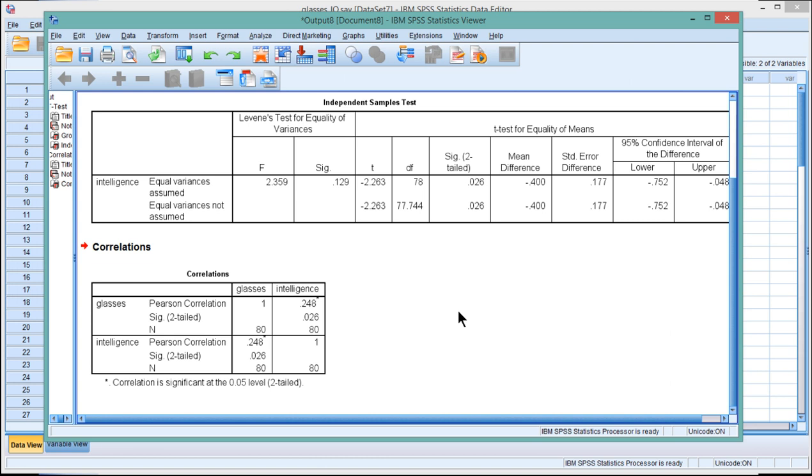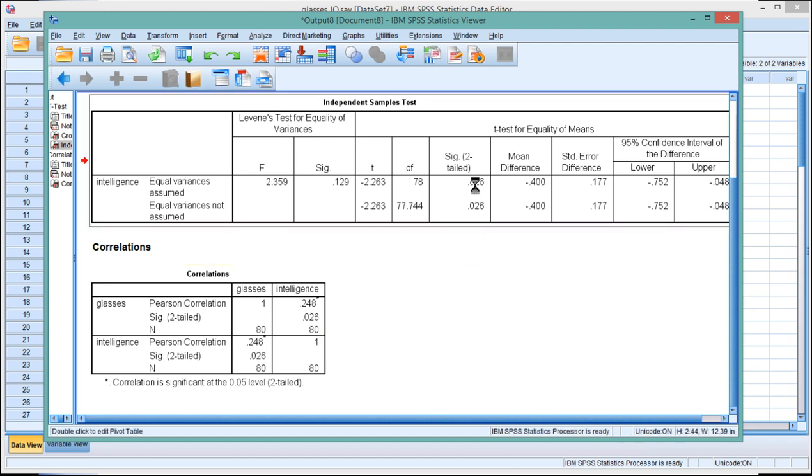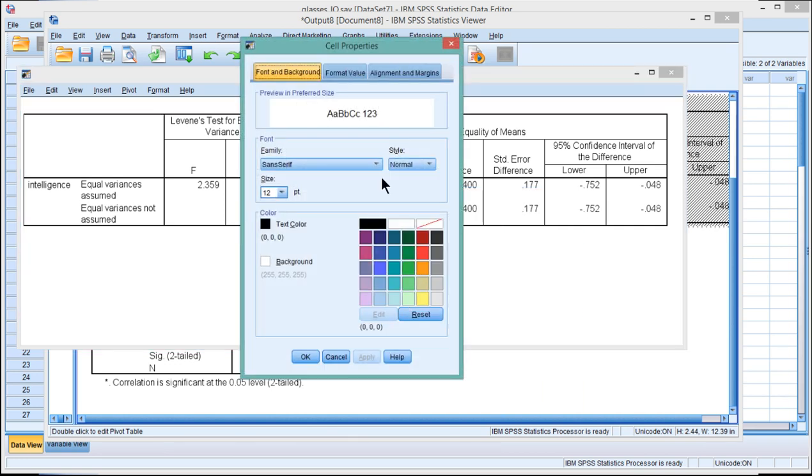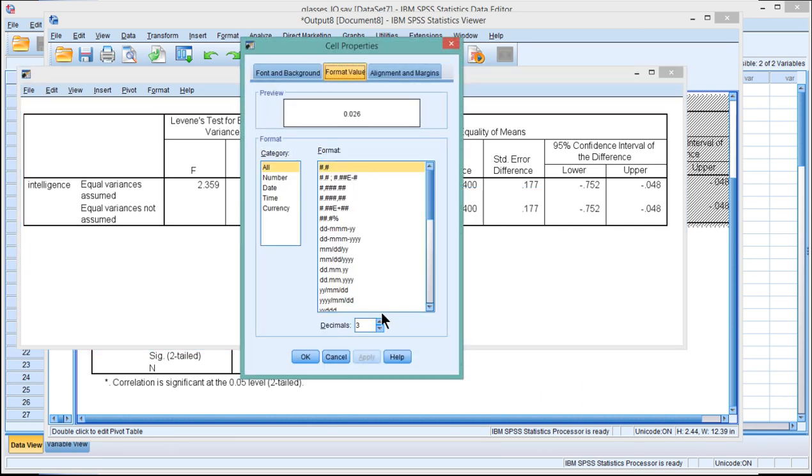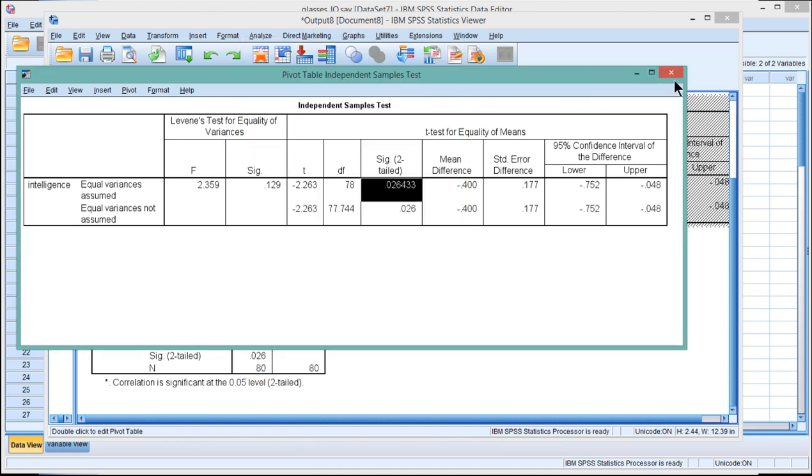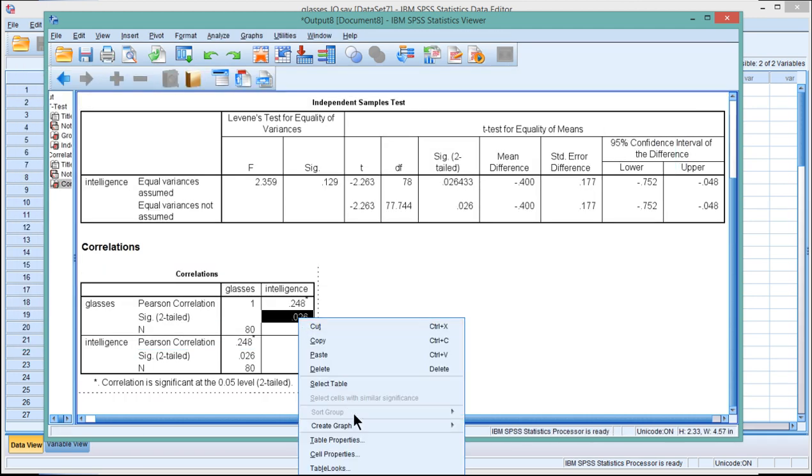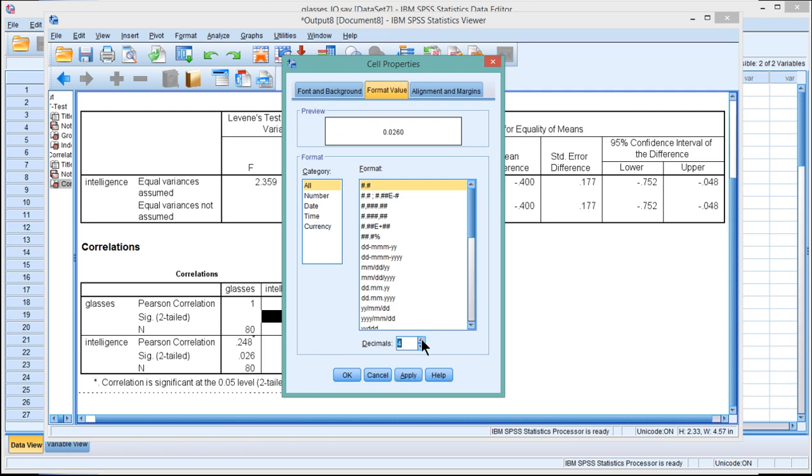It's known as a point-biserial correlation, even though I'm really just going to be doing a Pearson correlation on these data. We just happen to call it a point-biserial correlation in that circumstance. You can see that the correlation is 0.248 and the p value, most importantly, at least for this connection, is 0.026. And it's 0.026 here. That's not a coincidence. If I blow this out by further decimal places, let's just say if I go to six decimal places, I should still get the same p value from both of these analyses, which seem different but are actually fundamentally similar.